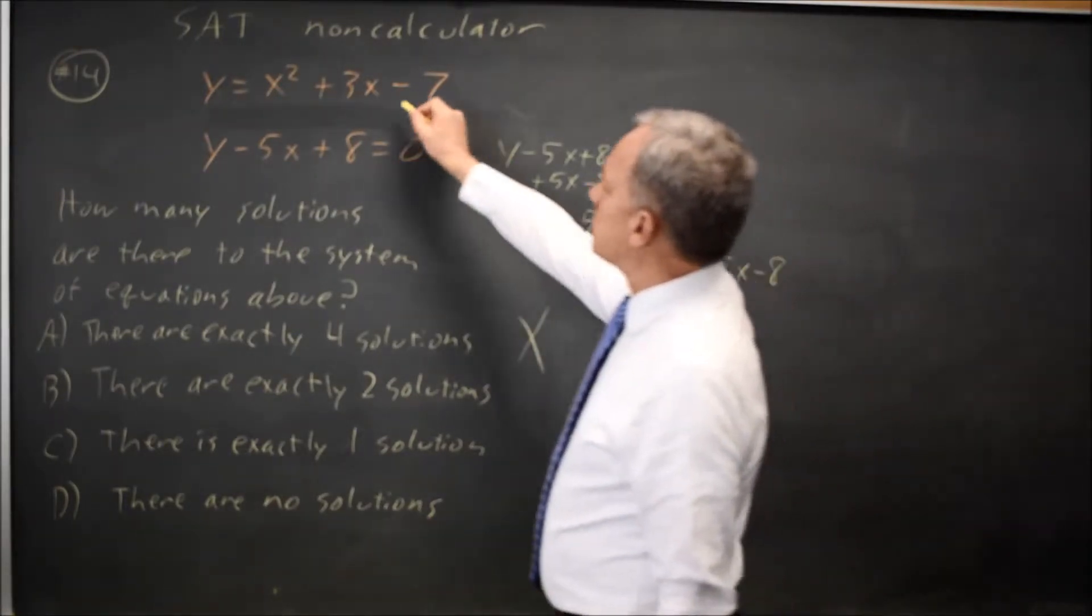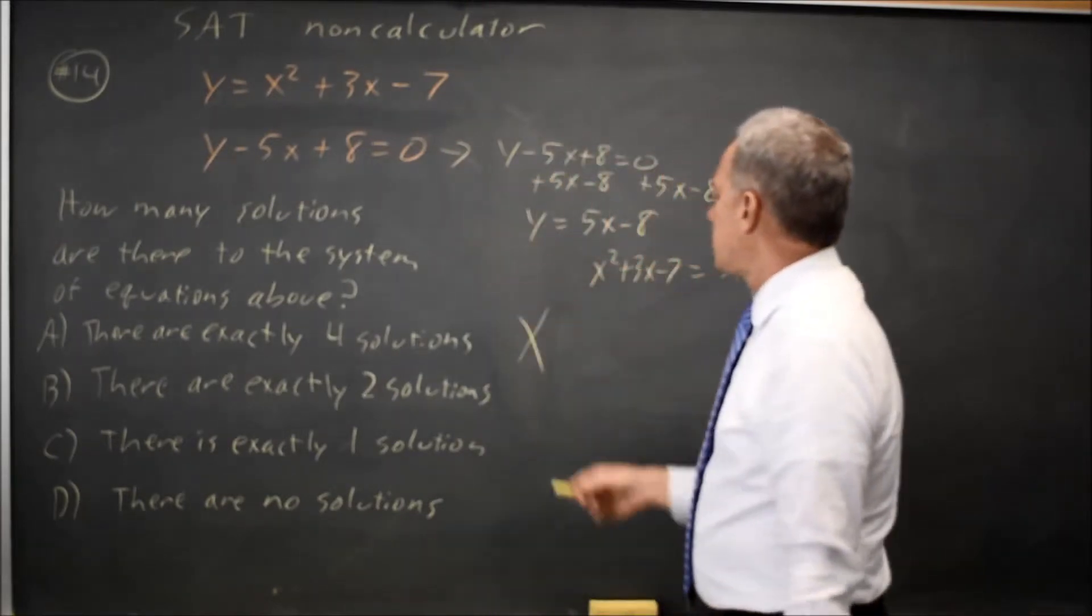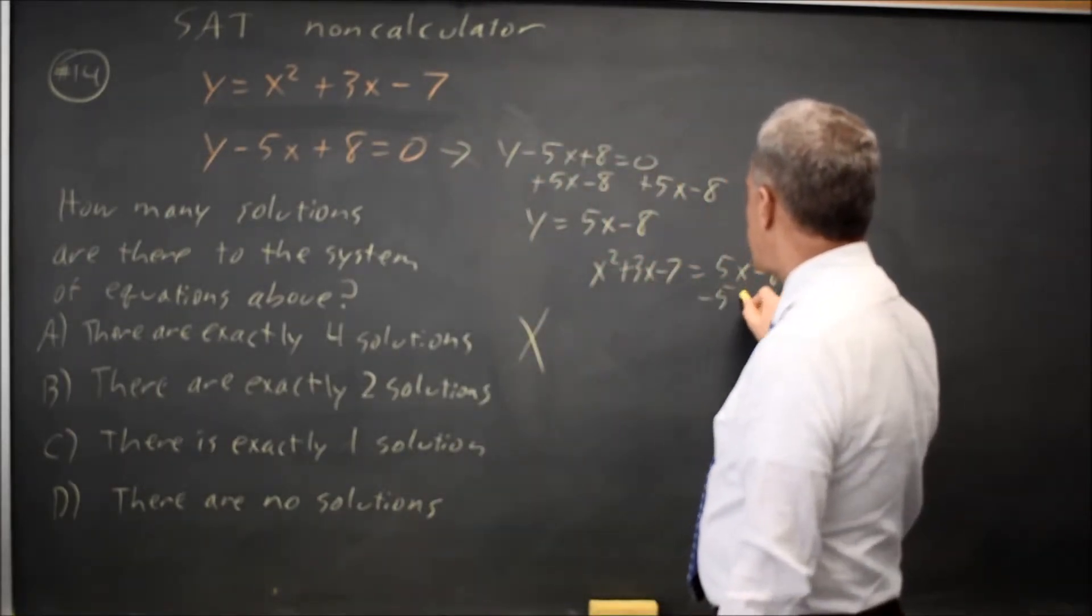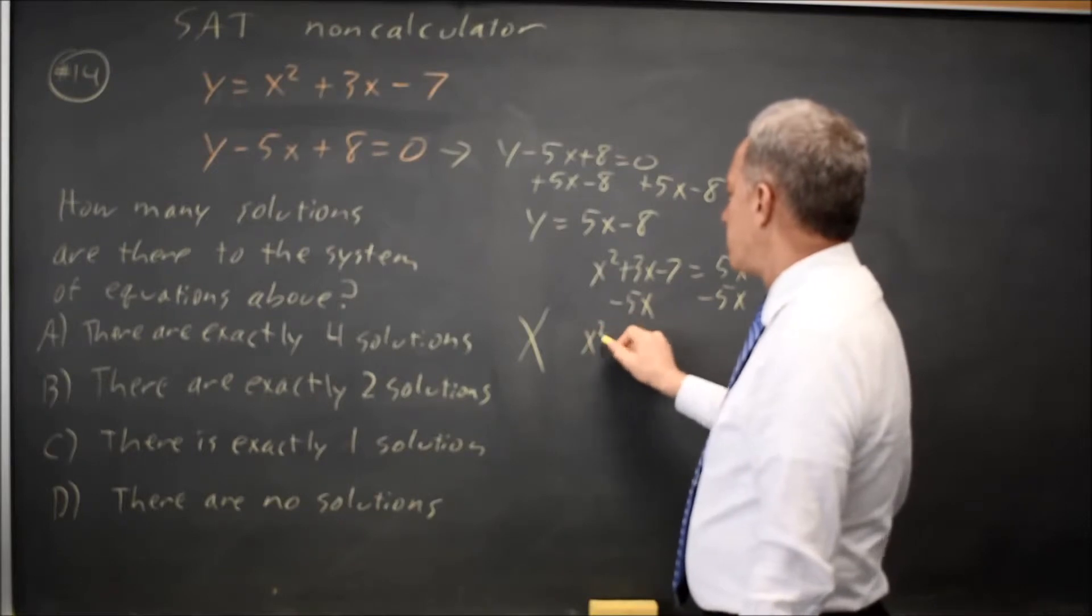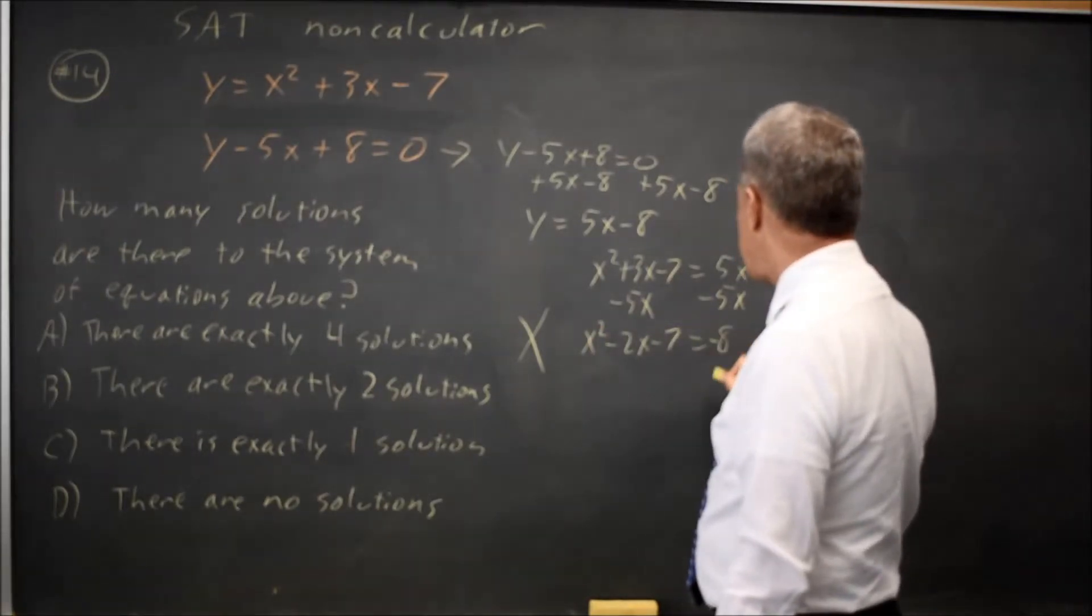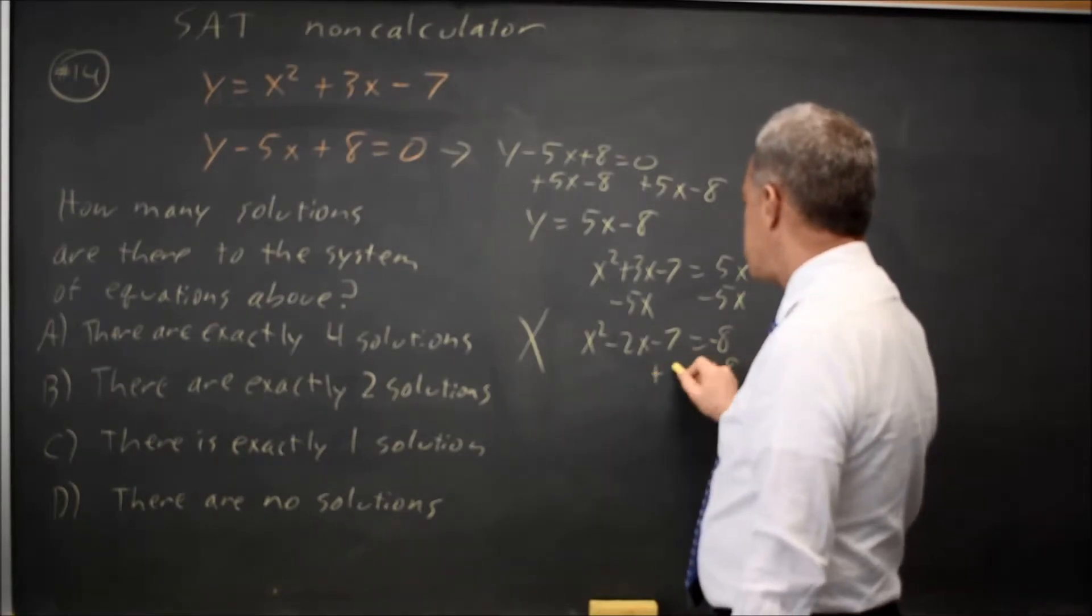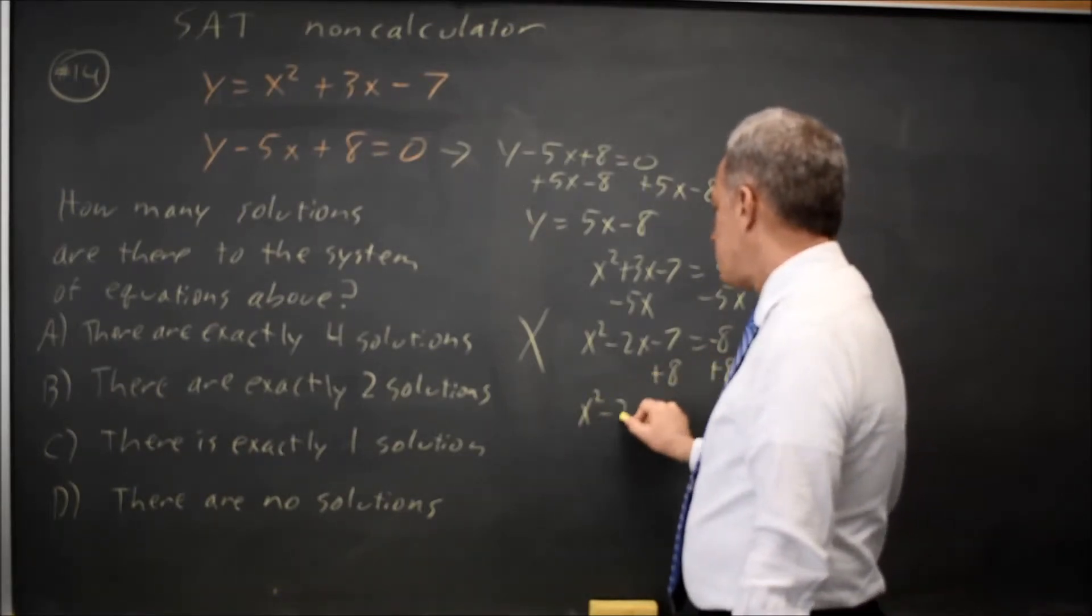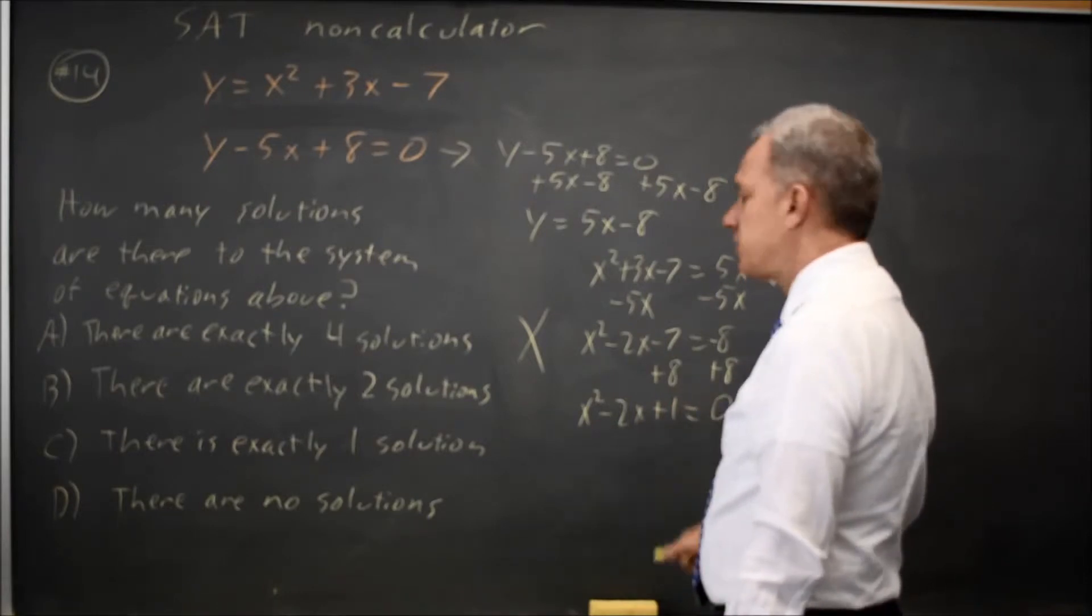If I substitute this expression for y in on the left here, subtract 5x from both sides and I have x squared minus 2x minus 7 equals 8, equals negative 8. Add 8 to both sides. x squared minus 2x plus 1 equals 0.